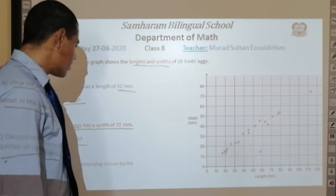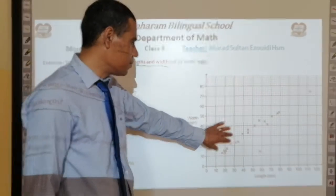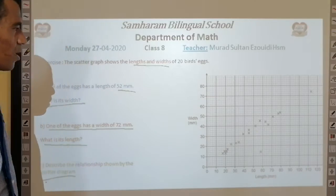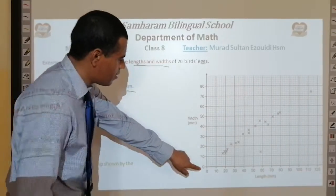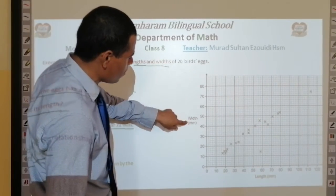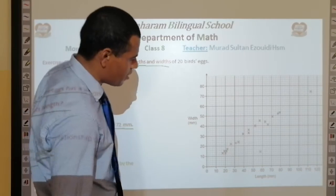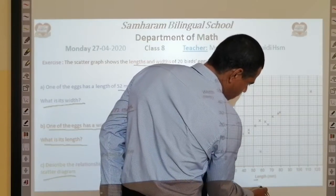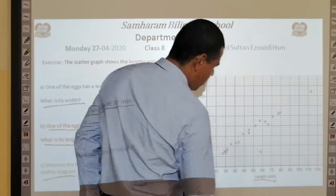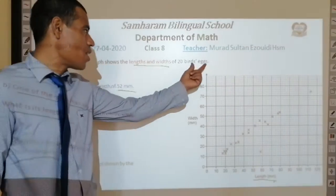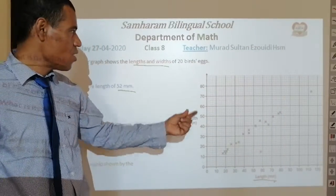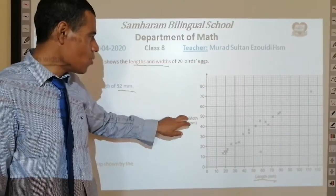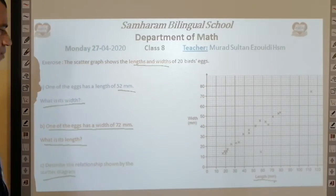Here we have the scatter graph, it is in front of your eyes. This vertical axis denotes the width in mm, and the horizontal axis denotes the length in mm — the length of birds' eggs. And this one denotes the width of birds' eggs.